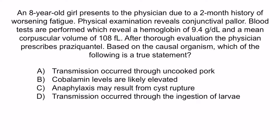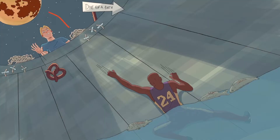From the question stem, you should notice that the infectious organism is Diphylobothrium latum, a tapeworm. The patient has anemia based on the low hemoglobin level, and the anemia is a macrocytic type since we see a high MCV of 108. We also see evidence of anemia with chronic fatigue and conjunctival pallor. We think macrocytic anemia is caused by a parasite because the physician prescribed praziquantel. The parasite that causes macrocytic anemia is Diphylobothrium latum, so the correct answer is D: Transmission occurred through the ingestion of larvae. The moon represents megaloblastic anemia, and Kobe Bryant low in the pit represents low B12/cobalamin.